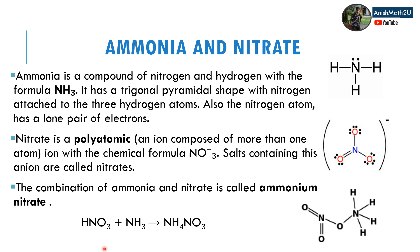In the nitrate structure, there is one oxygen with a double bond and two oxygens with single bonds. This oxygen has two lone pairs of electrons, this one has three lone pairs, and this one also has three lone pairs of electrons. The combination of ammonia and nitrate is called ammonium nitrate.